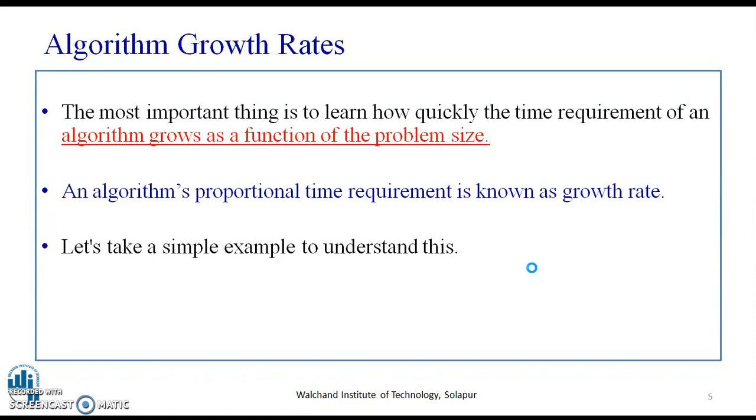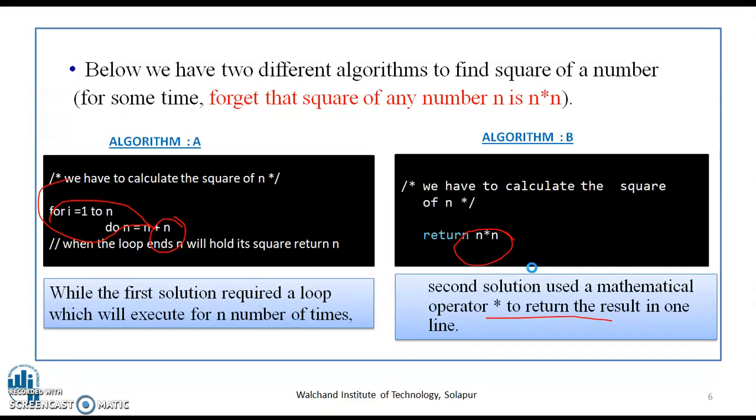Typically, we describe the resource growth rate of a piece of code in terms of functions. To help us understand, let's take a simple example. Below, we have two different algorithms to find square of a number. For some time, forget that square of any number is n into n. Here, we have algorithm A and we have algorithm B.